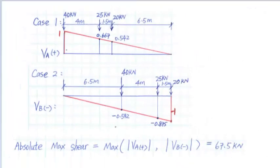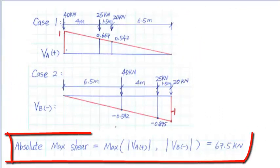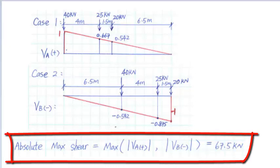The absolute maximum shear is the larger of case 1 and case 2, which is 67.5 kN.